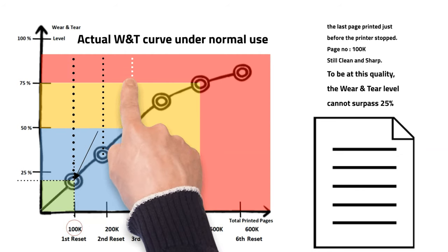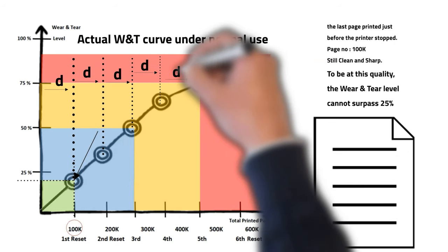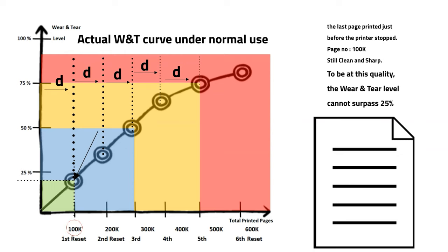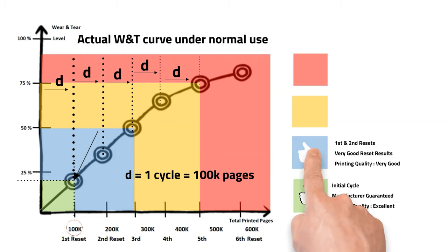The graph illustrates a reasonably estimated wear and tear level of parts under normal use conditions. The interval between the double rings on the graph corresponds to the manufacturer-declared length of the full cycle of the unit, such as 100,000 pages. Regarding the initial cycle of 100,000 pages shown in green in this case, the manufacturer guarantees the printing quality during this period, and the printing quality will be excellent. Once the manufacturer's guaranteed cycle ends, users can reset and reuse the same parts for at least two more cycles, shown in the blue area. The results of the first and second resets will be fully acceptable, even for business printing purposes.